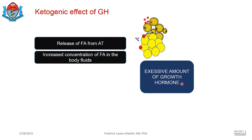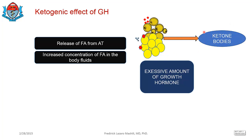Now let's talk about the ketogenic effect of growth hormone, which is one of its biological effects. When there is an imbalance in the levels of growth hormone — when you have an excessive amount — it causes excessive breakdown of adipose tissue to release free fatty acids, increasing their concentration in body fluids. Because this is excessive, not all the fatty acids released can be used to produce energy.